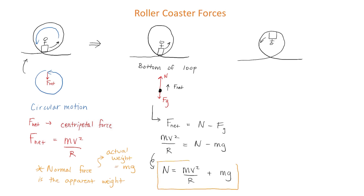The normal force is greater than the actual weight, meaning the rider would feel heavier at the bottom of the loop. Now let's look at what happens when the rider is at the top of the loop.